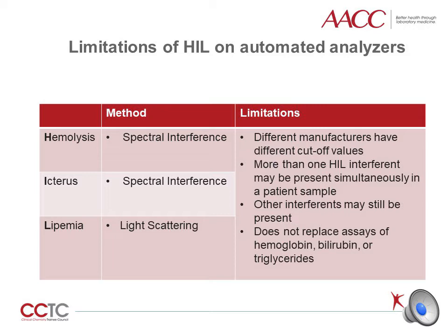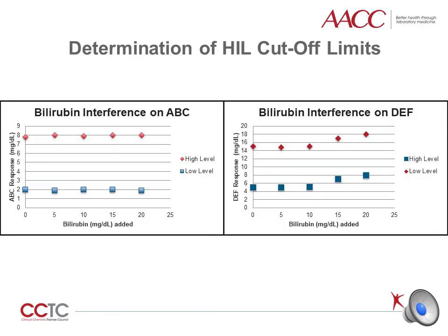HIL indices do not replace standard assays of hemoglobin, bilirubin, or triglycerides, since it is a nonspecific, semi-quantitative method. Analyzer manufacturers perform interference testing to assess potential HIL interferences on analytes. Various degrees of hemolysis, icterus, and lipemia are tested to determine if the result of an assay is significantly altered. Based on acceptability criteria of interferences, the manufacturer defines a cutoff value. In the example shown here, the response of the ABC analyte is not affected by increasing bilirubin concentrations. However, the same does not apply to analyte DEF — the DEF response changes with increasing bilirubin concentrations.